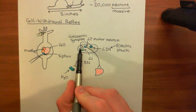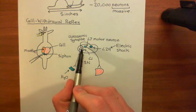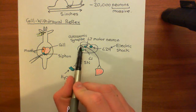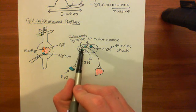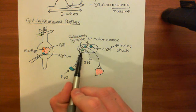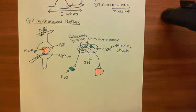What we now want to look at is this axo-axonic synapse in more detail — specifically what the L29 neuron releases onto the axon terminal of the L1 sensory neuron, and how that results in increased neurotransmitter release. But we'll do that in the next video.